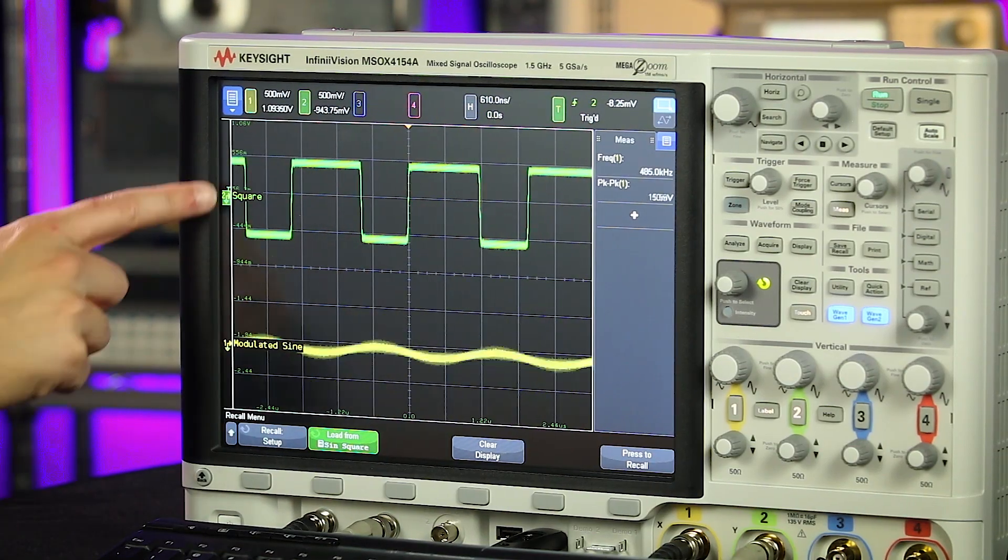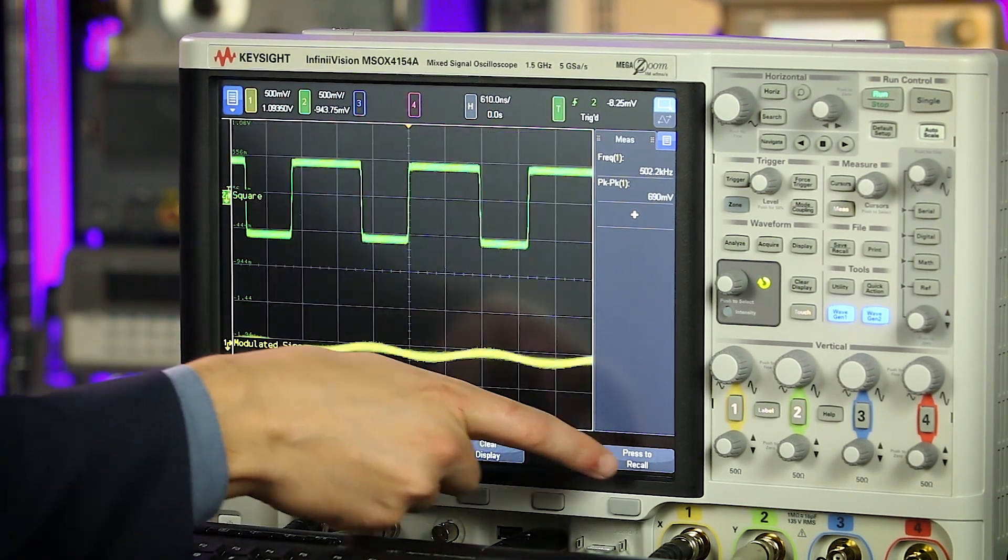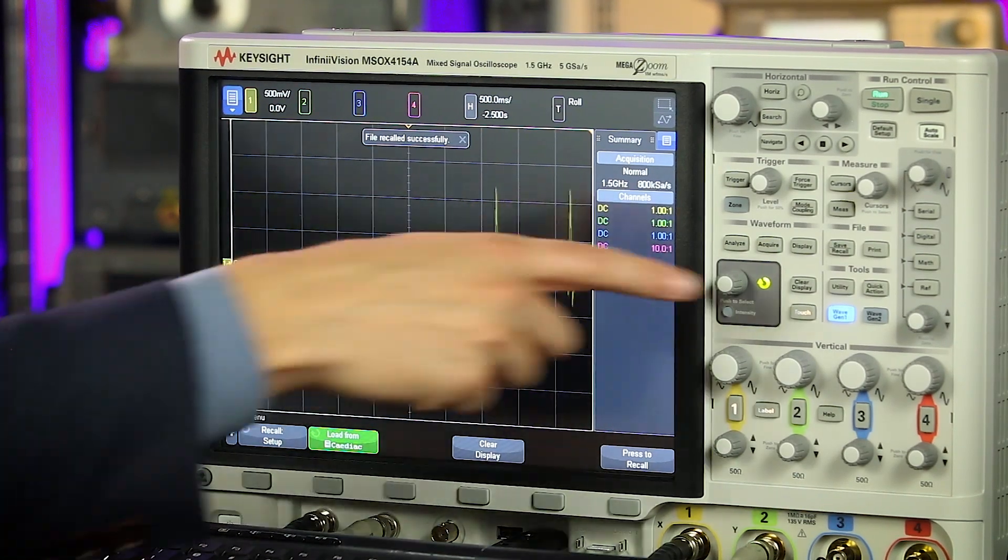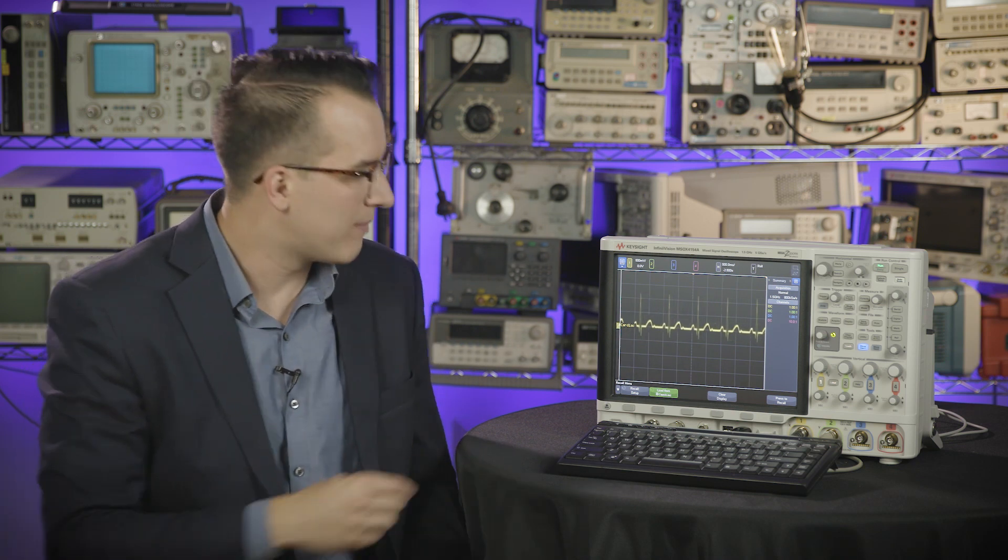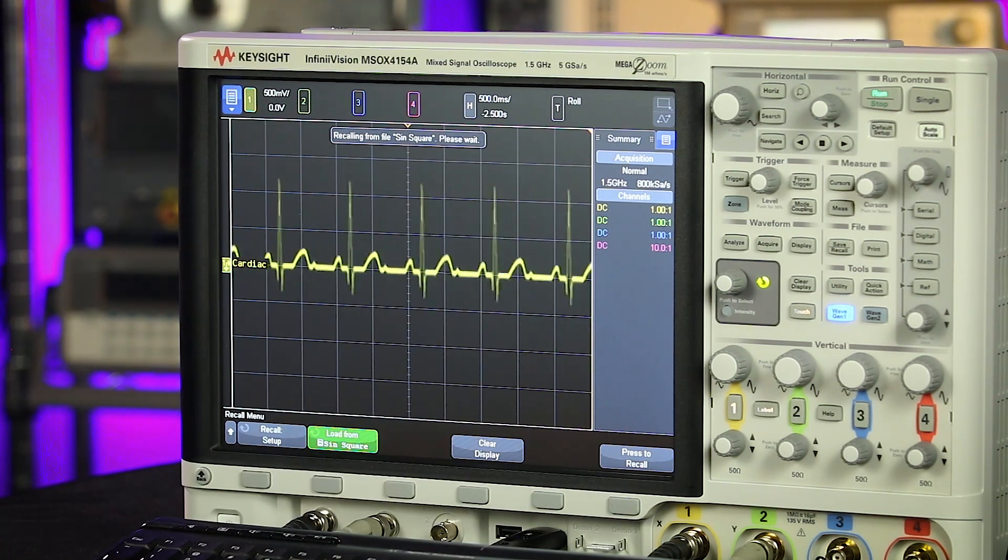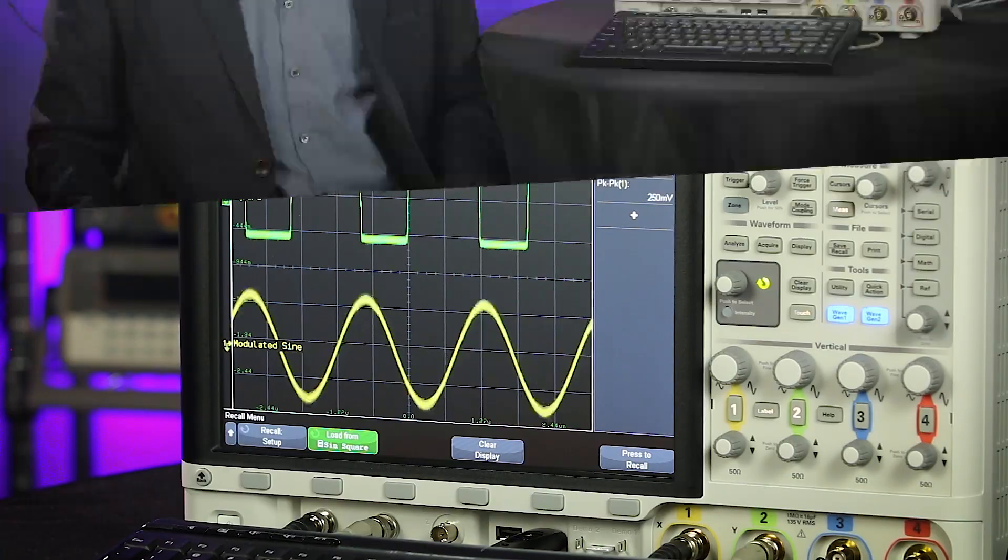So here I've saved this setup and I have a couple channel labels and I want to load my cardiac setup. So I'm going to recall that signal and you can see now it's gone into roll mode. It's changed my waveform generator output settings and it's a completely different scope setup. And now if I want to go back to my other one, all I have to do is go back to that setup I saved, recall it, and it's automatically going to restore both my signals and my labels and everything else I changed on the scope.